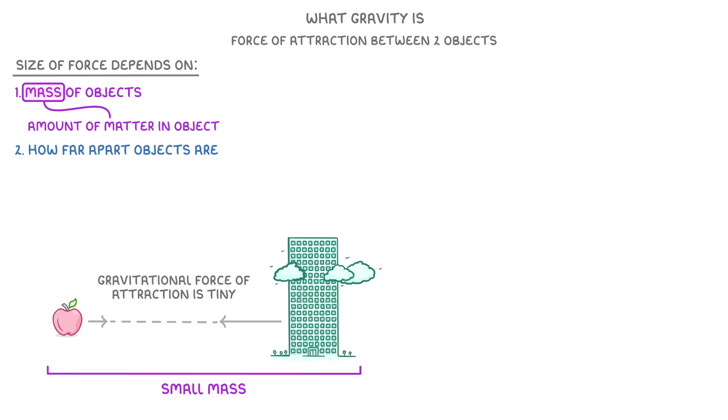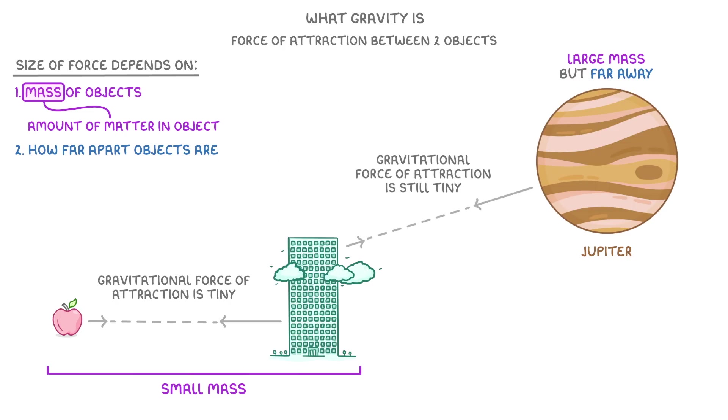The same goes for huge objects, like Jupiter, that have a really large mass but are far away. For example, the gravitational force of attraction is still tiny between this building on Earth and the planet Jupiter, even though the planet is huge, because it's just so far away.